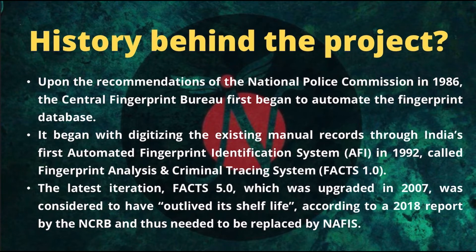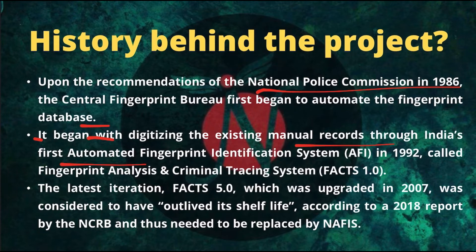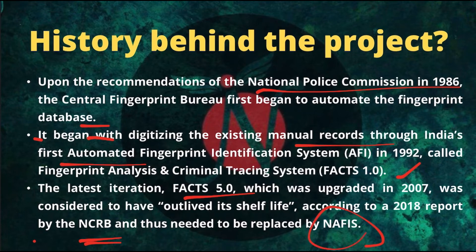The project was started upon the recommendation of the National Police Commission in 1986. The Central Fingerprint Bureau first began to automate the fingerprint database by digitizing existing manual records through India's first automated fingerprint identification system in 1992, called Fingerprint Analysis and Criminal Tracking System FACTS 1.0. The latest iteration, FACTS 5.0, upgraded in 2007, was considered to have outlived its shelf life according to a 2018 NCRB report, and thus needed to be replaced by the new National Automated Fingerprint Identification System.